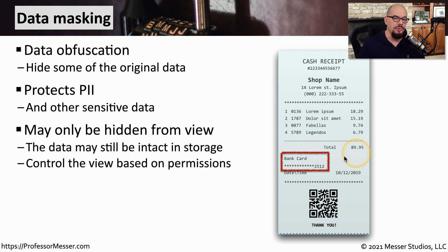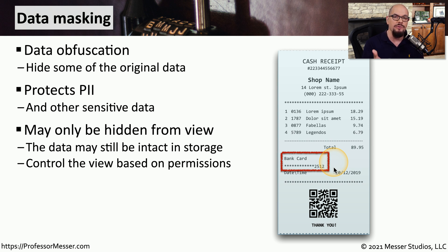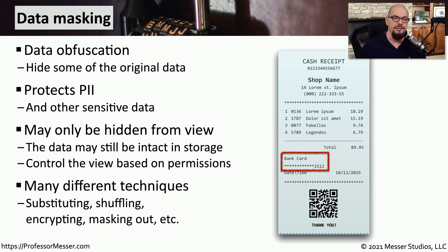As we see this information stored on something like a receipt, we see asterisks. But the data itself, including the full credit card number, may be stored on other servers within the organization — it's just that we don't have rights to see that number. So anytime we print it or create a receipt, the number is masked automatically. There are many different techniques used for masking: it might be encrypting some of the data, moving the numbers around so they're not in the same order, or substituting with completely different information.